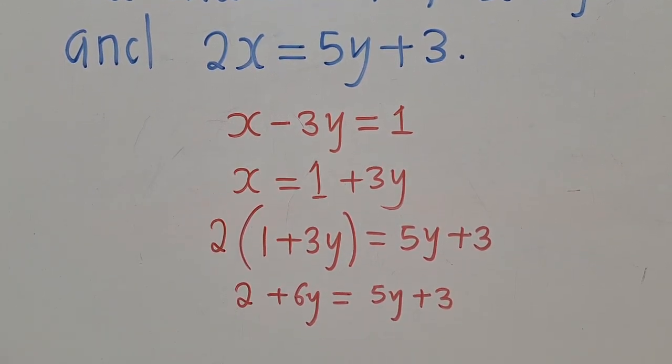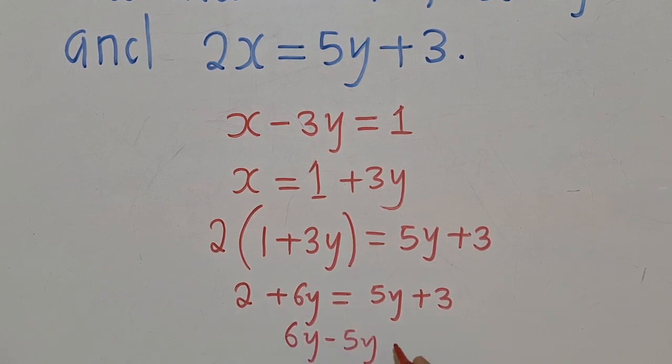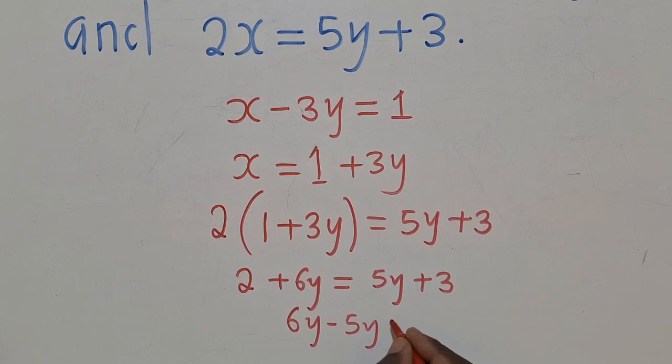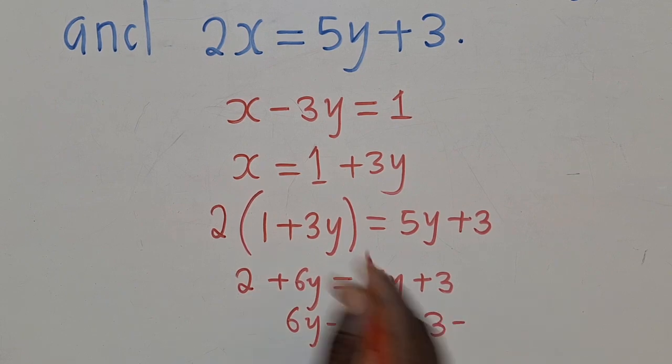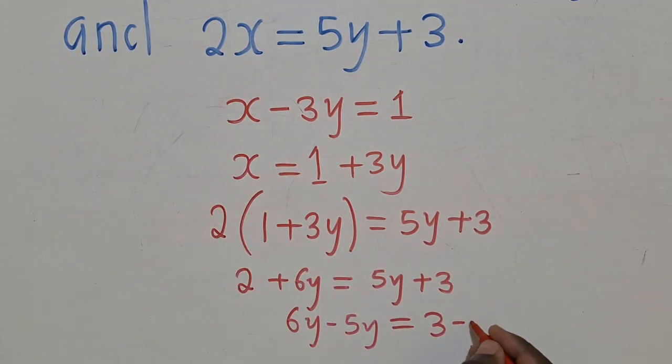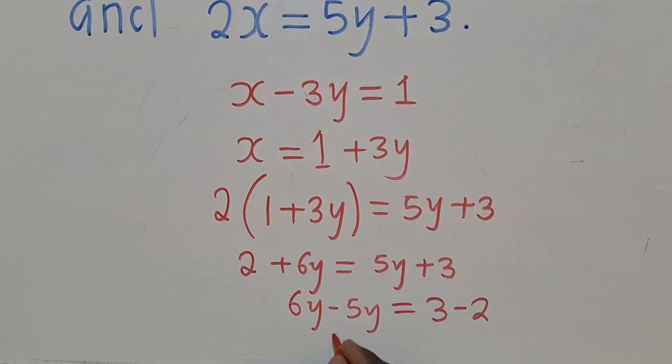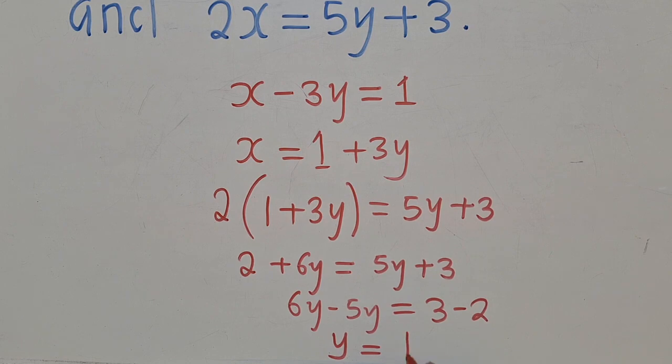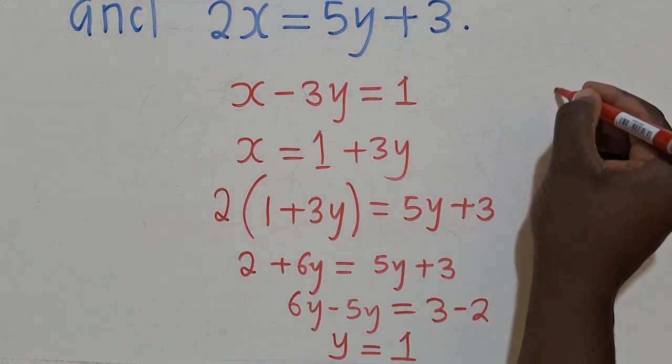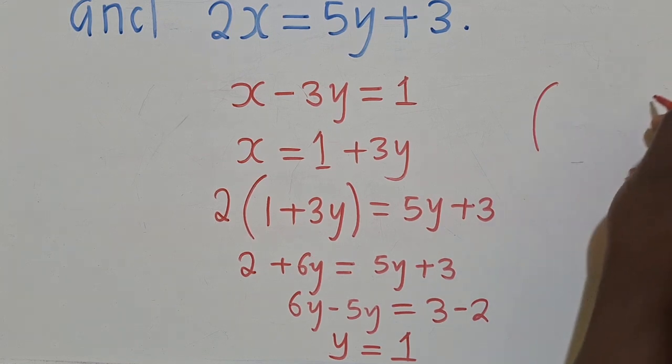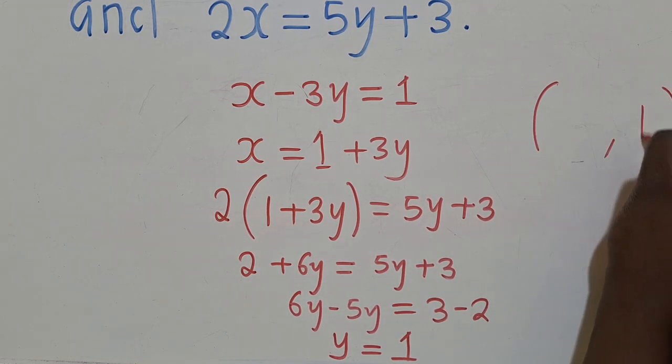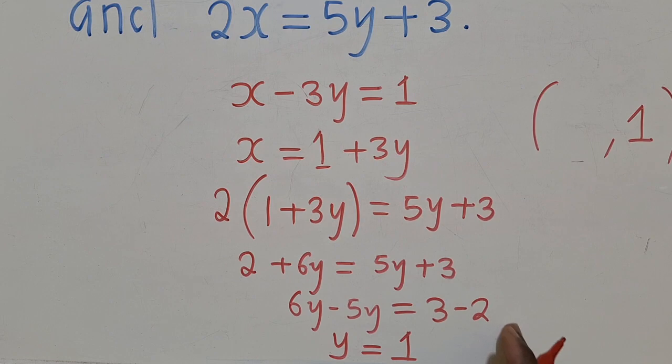Thereafter, we solve for it. We shall group the like terms. So this is how it will look like. Hopefully, you know what is happening here. So we have this, whereby y will simply be equal to what? Will be equal to 1. 3 minus 2, it's 1. So I've gotten now the coordinates. I mean, one of the coordinates, which is the y value.